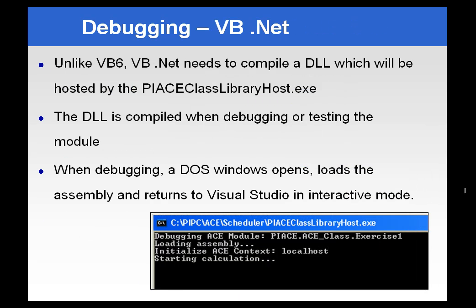There is one small difference when you're debugging with the .NET Studio environment. Unlike Visual Basic 6, which compiles an executable for each of its ACE calculations, VB.NET compiles DLLs which are then hosted by the PI ACE class library host executable file. What this means is that when we test a DLL in .NET, we have to open up a DOS window, compile the assembly, load the assembly, and return to Visual Studio. This is a behavior you will experience in .NET that you will not in the Visual Basic 6 development environment — it's a subtle difference, probably resulting in just a flashing DOS window temporarily.